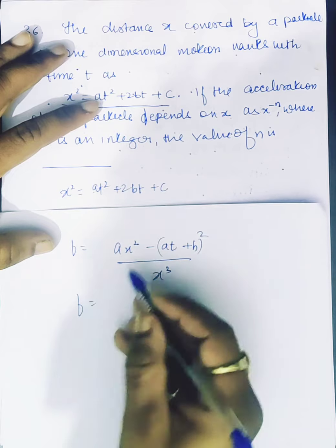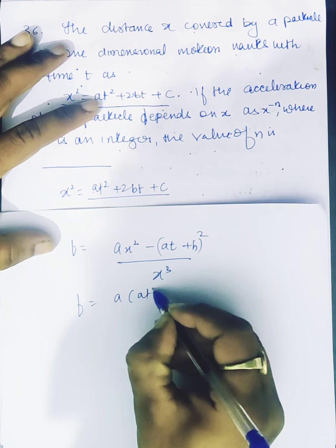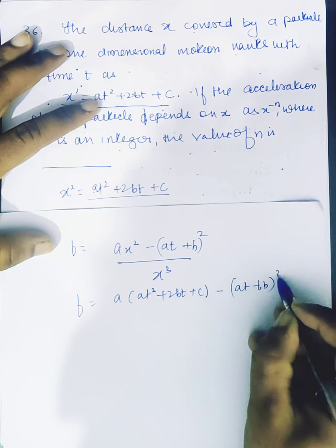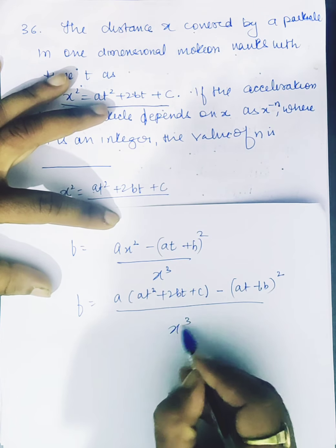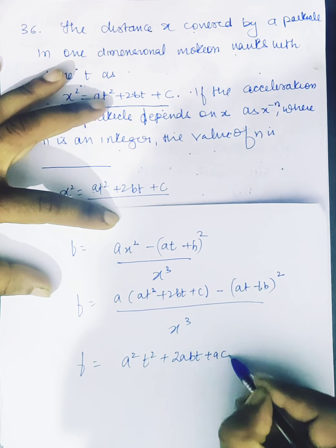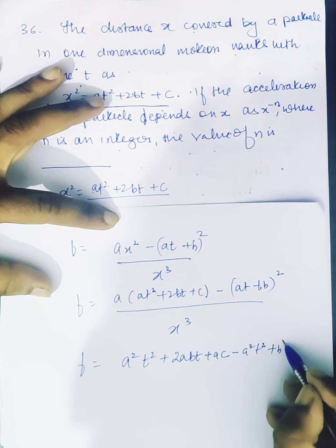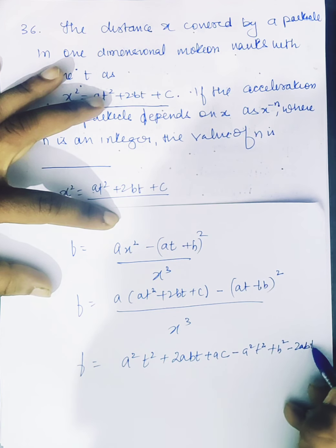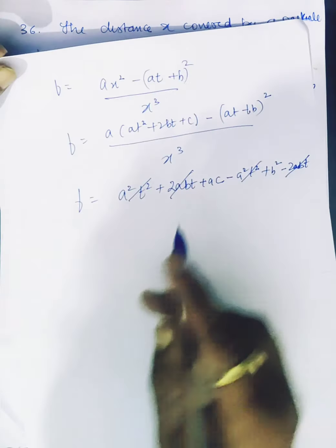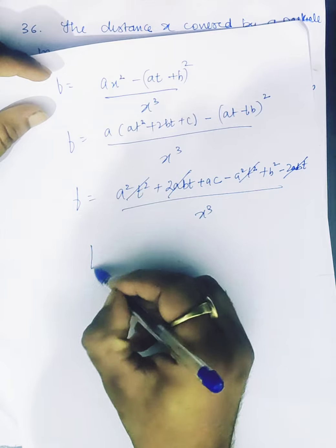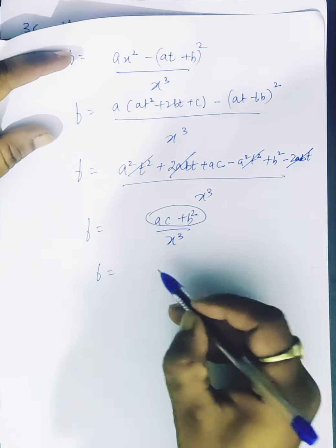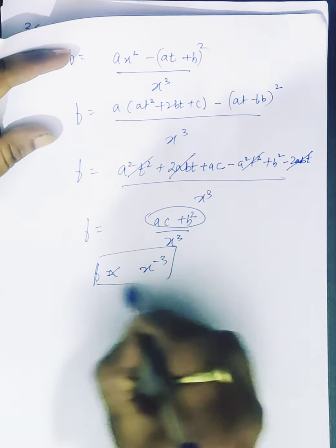Substituting x squared equals at squared plus 2bt plus c in the numerator: a(at squared plus 2bt plus c) minus (at plus b) squared equals a squared t squared plus 2abt plus ac minus a squared t squared minus 2abt minus b squared. The a squared t squared and 2abt terms cancel, leaving ac minus b squared divided by x cubed. So acceleration f equals (ac minus b squared) divided by x cubed, meaning f is proportional to x to the power minus 3.